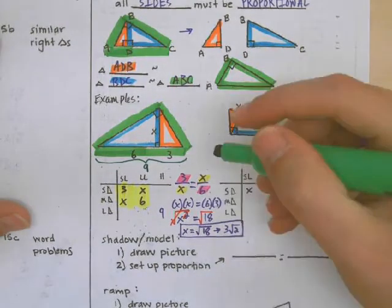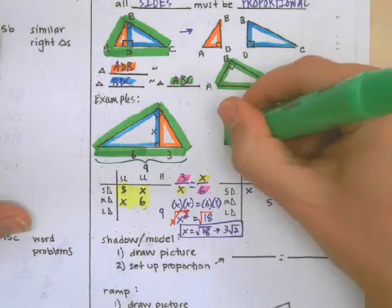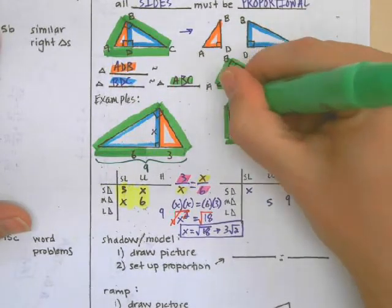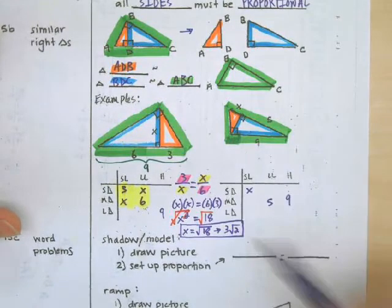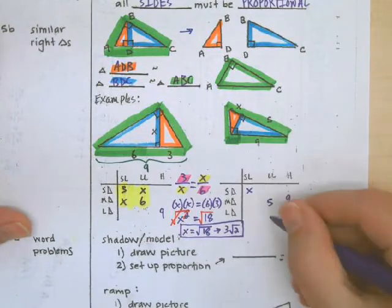And then for the large triangle, we don't know the short leg, but we know the long leg is 9.